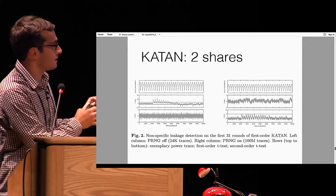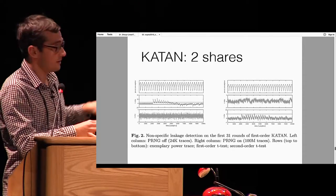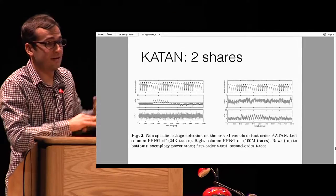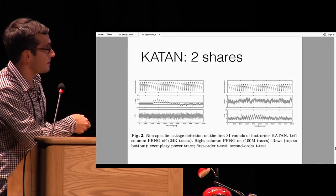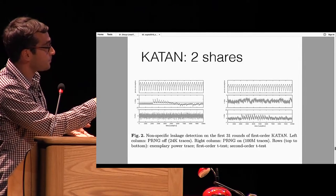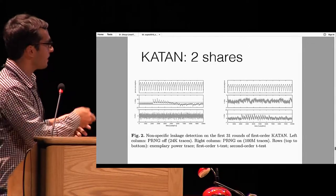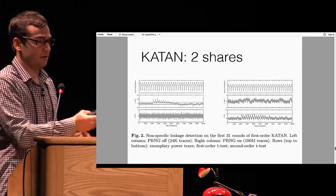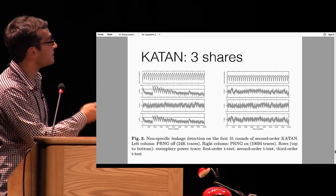The results of a T-test evaluation — a non-specific leakage detection test — are shown. On the left is the result when the countermeasure is switched off by disabling the randomness; on the right is the result when we switch the randomness on. You can see the statistic surpasses a threshold indicating evidence for leakage without the countermeasure. When we turn on the countermeasure, the statistic remains within bounds, indicating leakage is reduced. This is for first order; the second-order results show residual leakage as expected with only two shares. We also synthesized a version with three shares, and similar results hold.